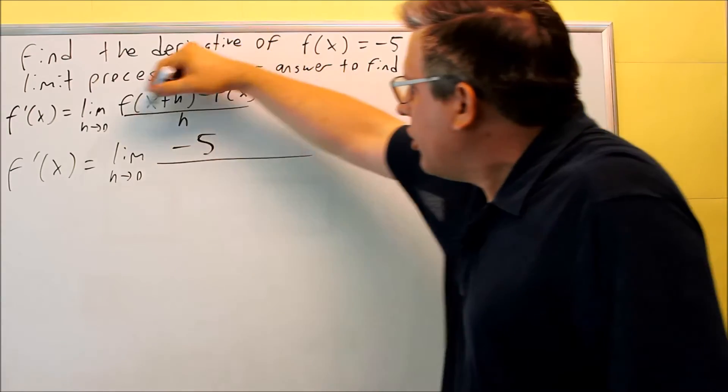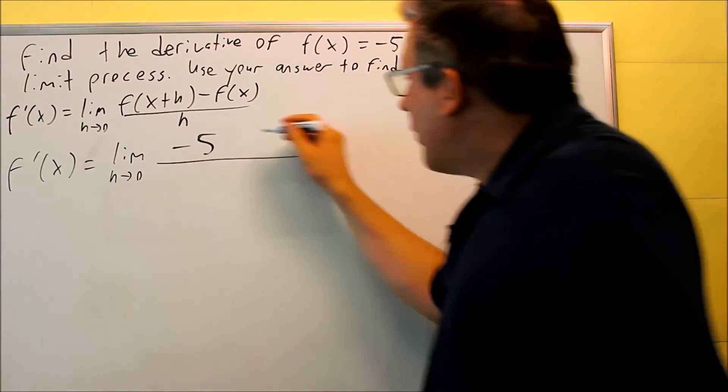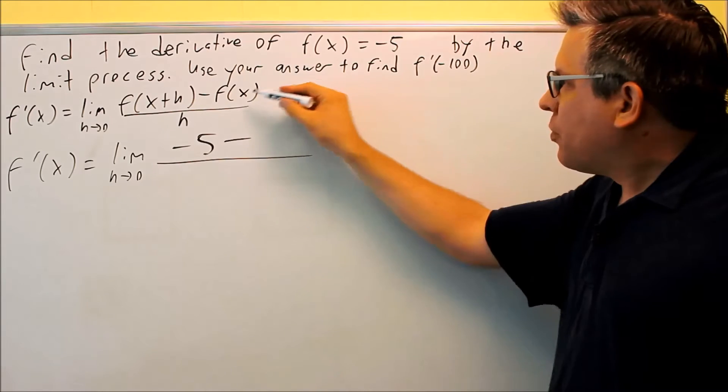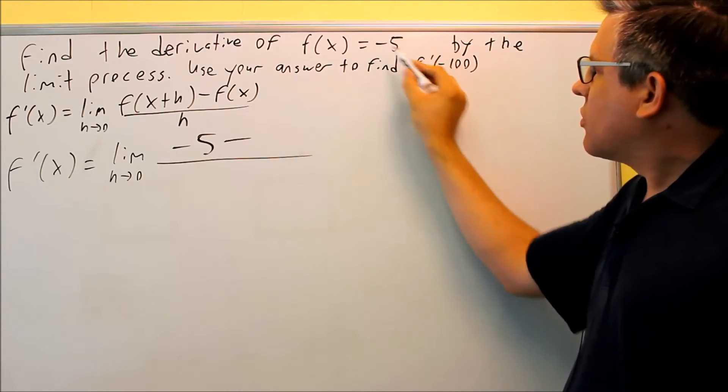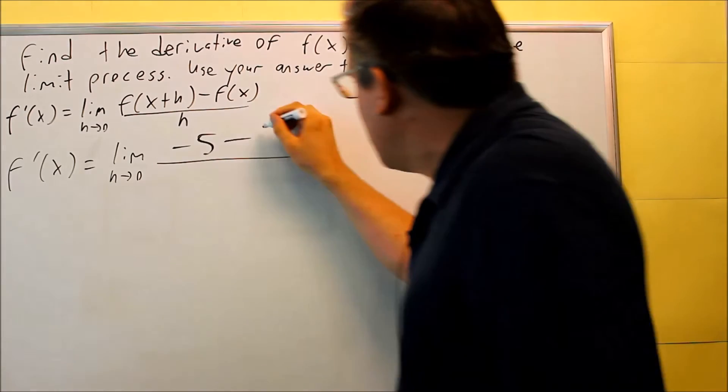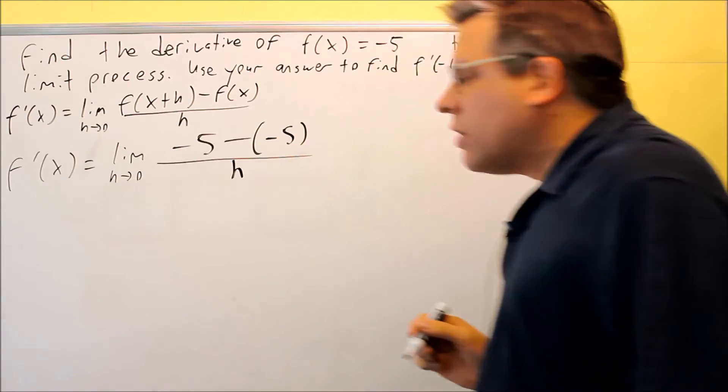So I'm just going to put that in. Negative 5 would go in here for f of x plus h. I have a minus, and then I'm going to put in f of x. Well, f of x is this formula right here, negative 5. So I have that. That's going to be over h.